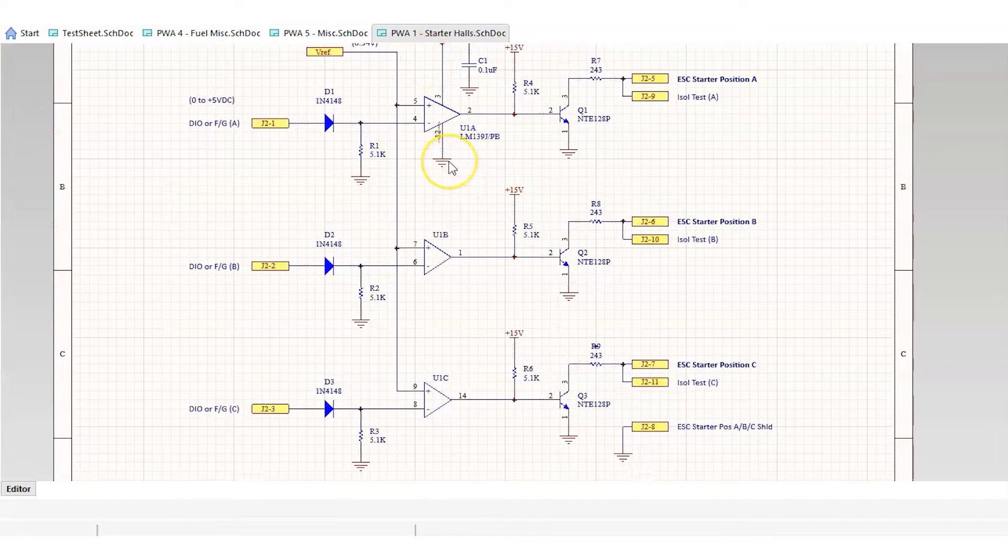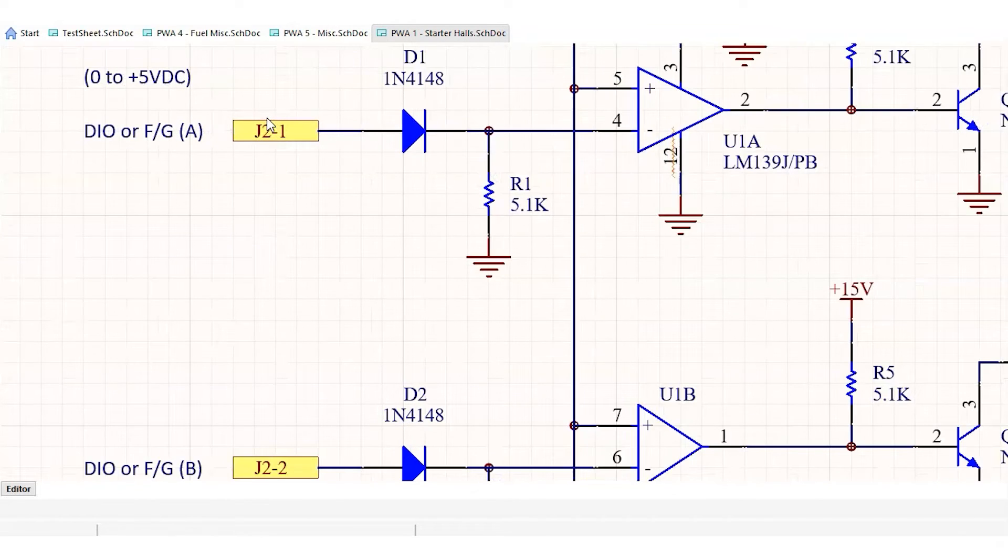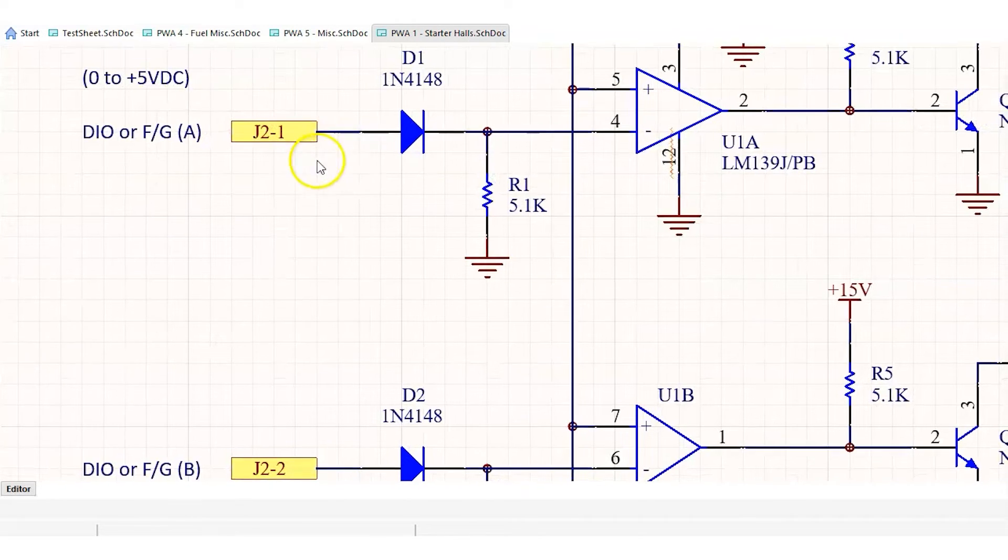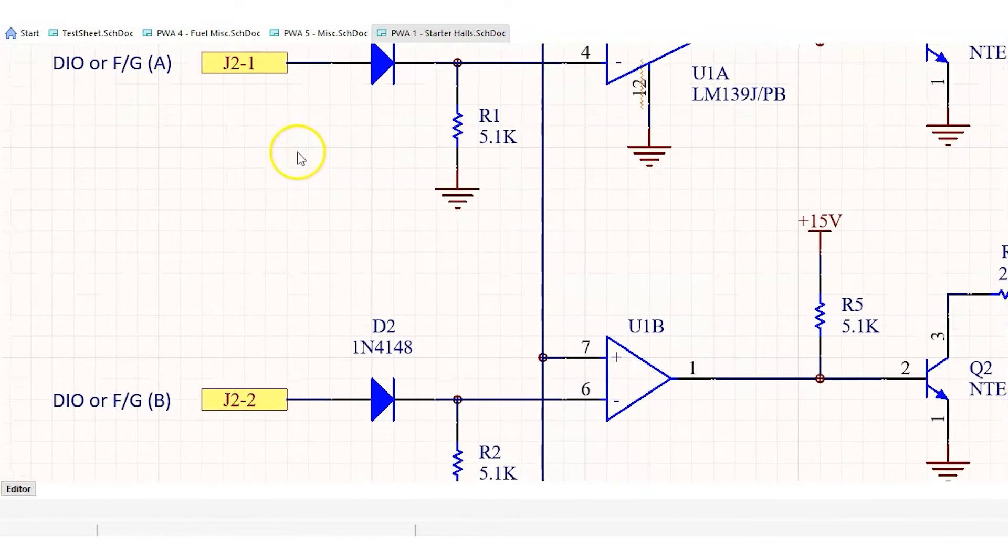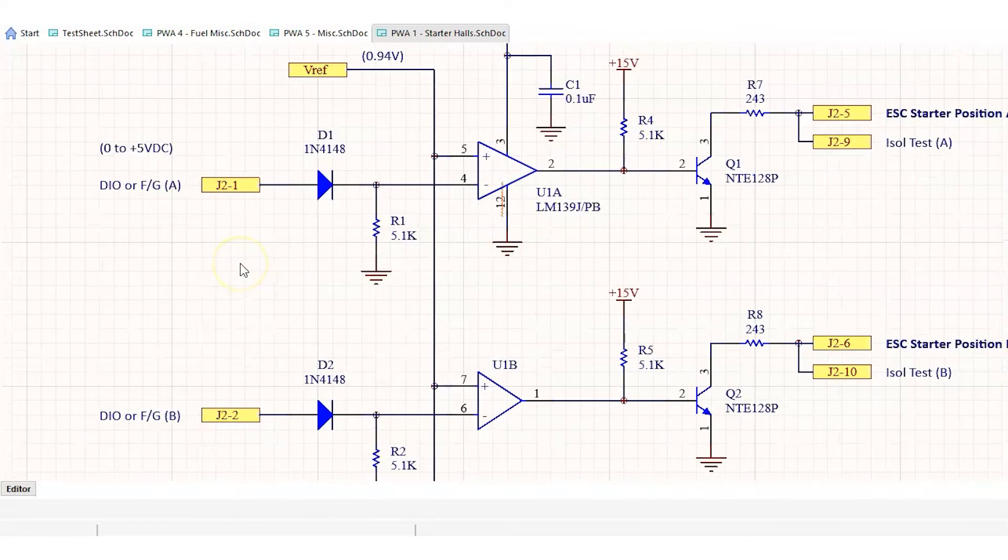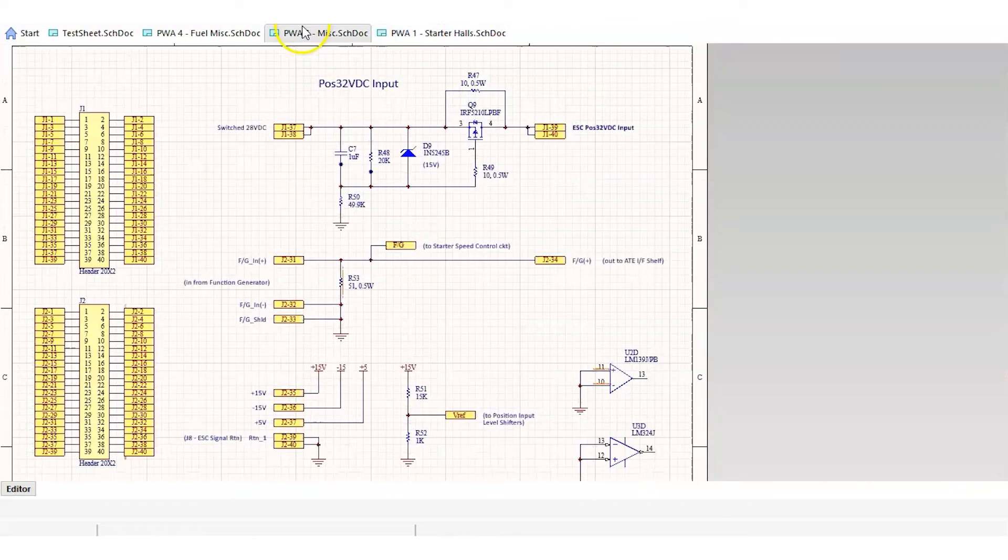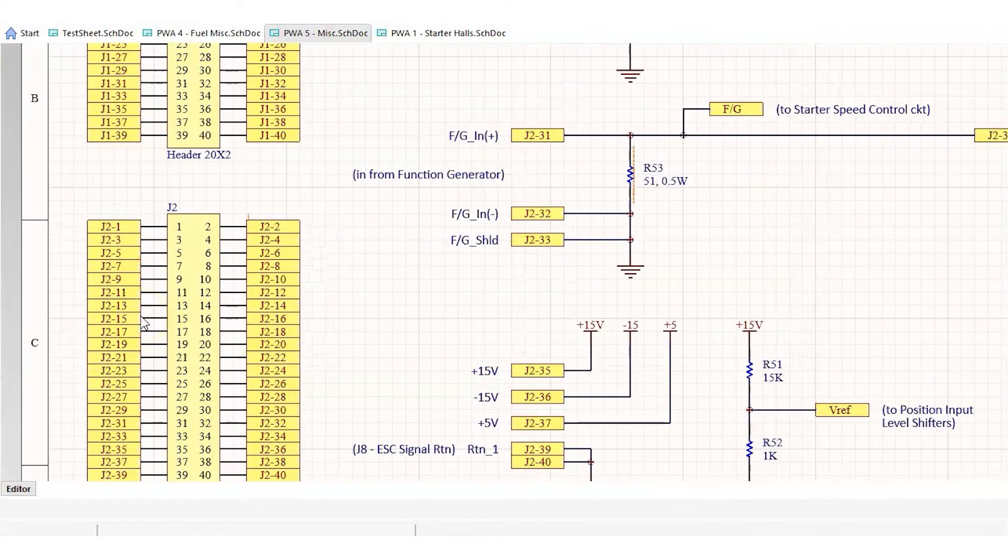As you build up your schematics and add new components, it's easy to add new ports and set net names to define net associations in multiple schematic sheets. Best practices state to use net names for connections inside a schematic sheet and use ports for connections between multiple sheets. Here, J2-1 defines the connection back to connector J2 pin 1 over here in my other schematic sheet.